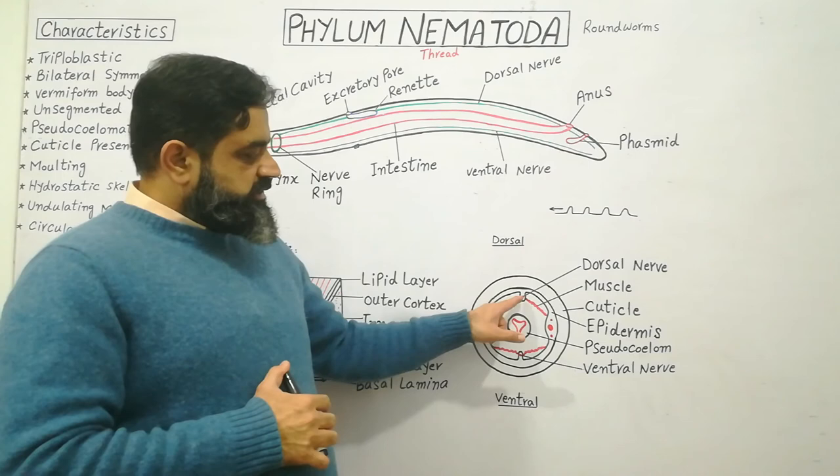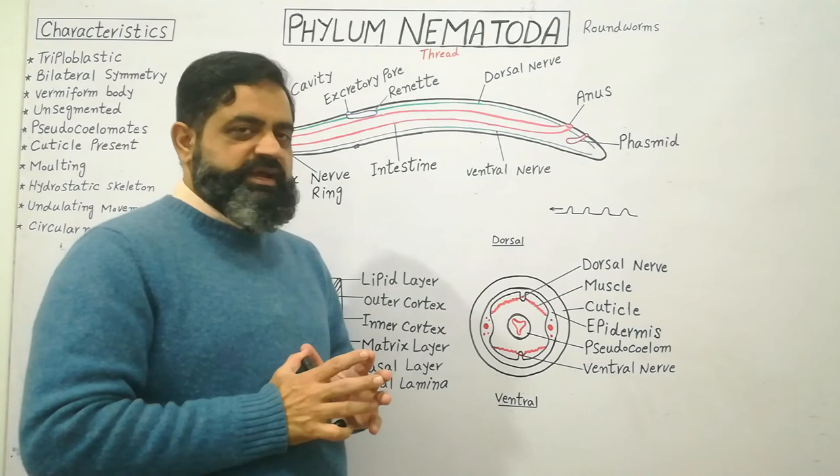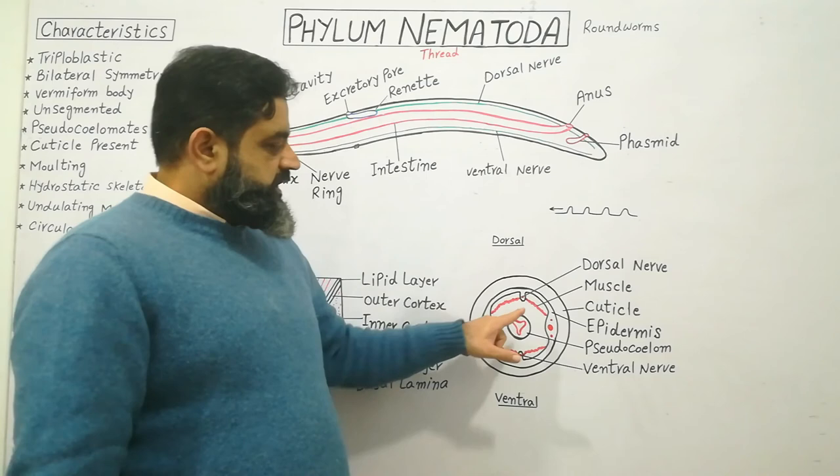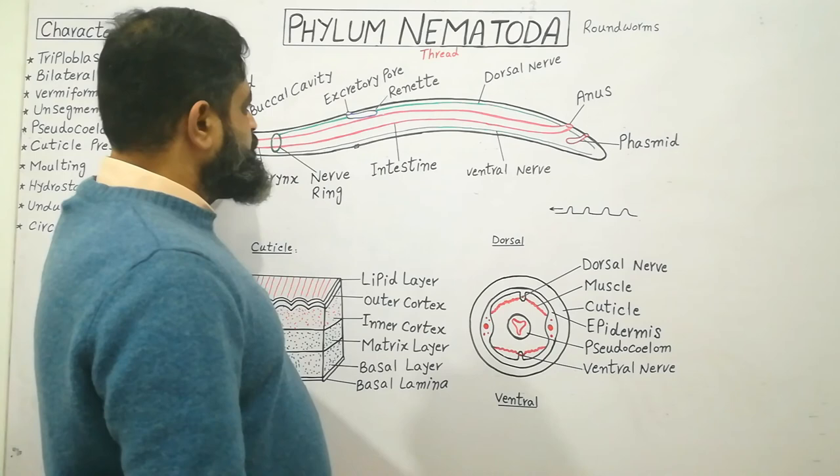In the cross-section we can also see the dorsal nerve and ventral nerve, and the excretory system. There are four bands of longitudinal muscles present inside this animal — one on each of four positions — running along the whole length of the animal.